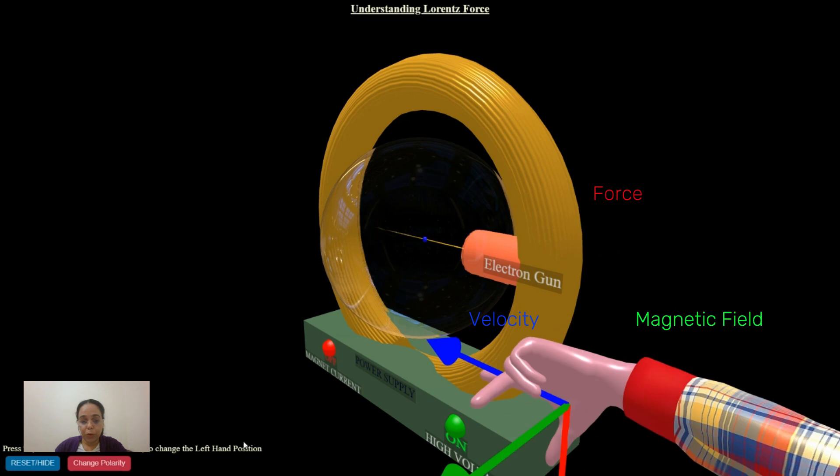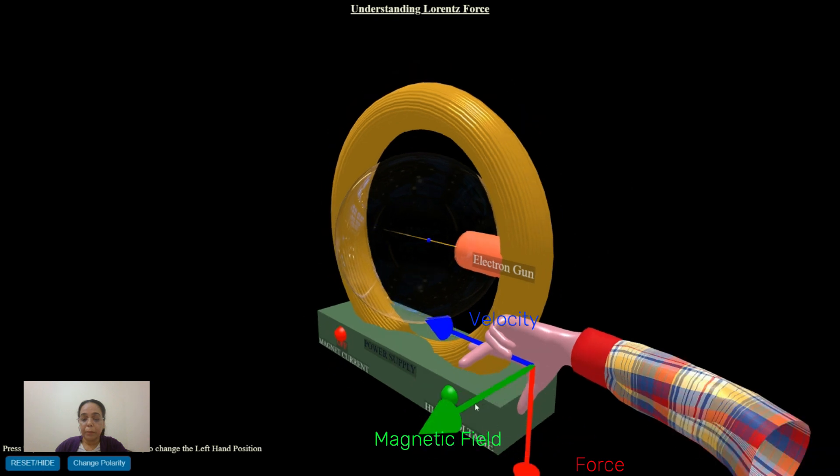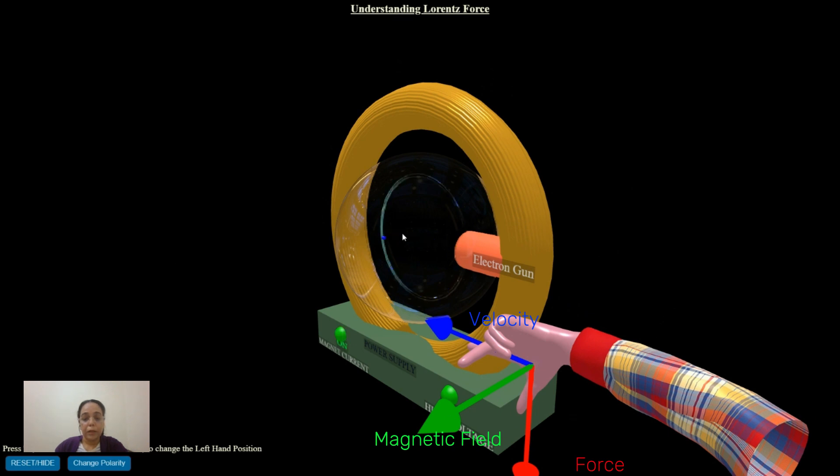If you change the polarity of the magnetic supply, you can see that now the direction of the magnetic field is in this direction, and the electron will be moving in the clockwise direction.